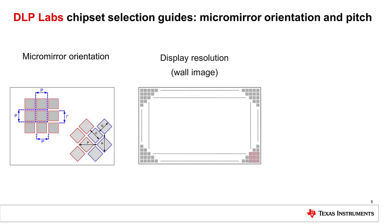In a DLP system, the display resolution is a function of the number of mirrors on the DMD. Each mirror can represent one or more pixels of the displayed image. Resolution is the number of pixels that can be displayed on the screen, measured by the number of horizontal pixels in each row and the number of vertical pixels in each column. DLP display resolutions range from 640 by 360, or NHD, to 3840 by 2160, or 4K UHD.